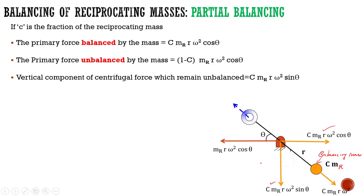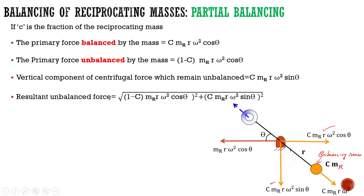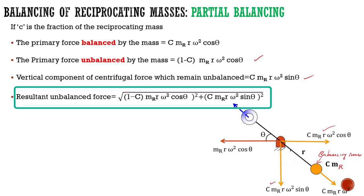Now let us see how to calculate the resultant unbalanced force. The resultant force can be calculated using this formula: the square root of the square of the net horizontal component which remains unbalanced plus the square of the net vertical component which remains unbalanced. By using this formula, we can find out the resultant unbalanced force after carrying out the partial balancing of reciprocating masses.